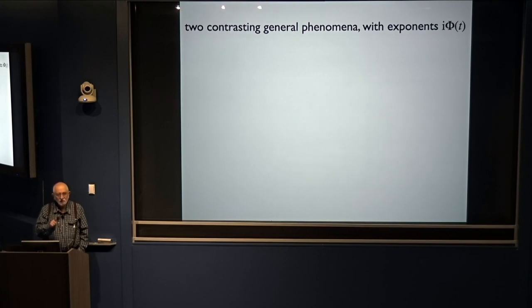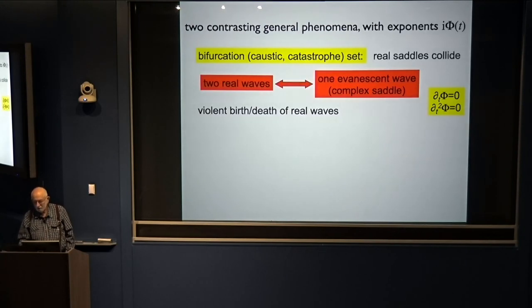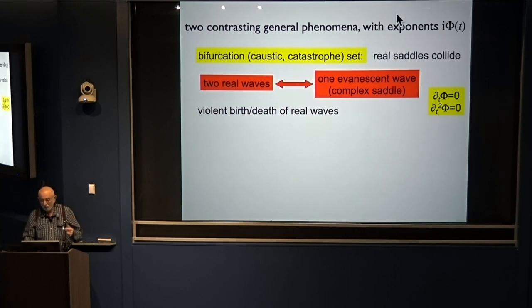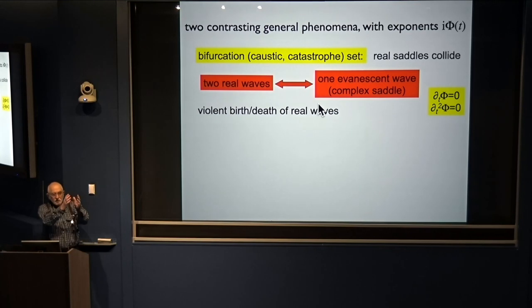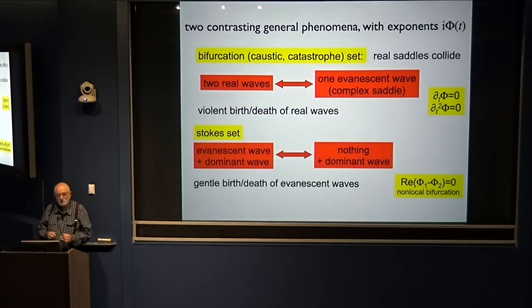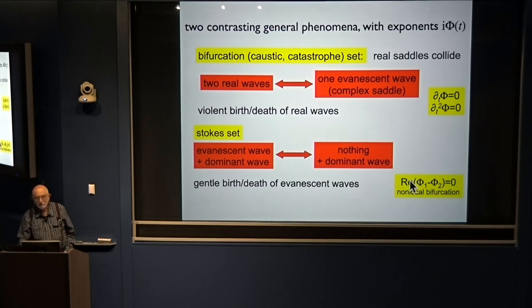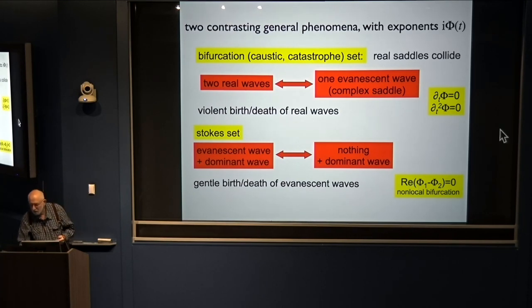There are two contrasting general phenomena. If you imagine a function with exponents i times phi, so phi is a phase, the bifurcation set is where saddle points coincide — two real ones coincide and become one evanescent wave, where the phase is stationary to higher order. This is the violent birth and death of real waves across these caustics, the dominant features. But the Stokes set is a much gentler thing — it happens quietly. It's a non-local bifurcation where at two saddles the phases are the same so the imaginary parts are maximally disparate — that's the hiding of the small behind the big.